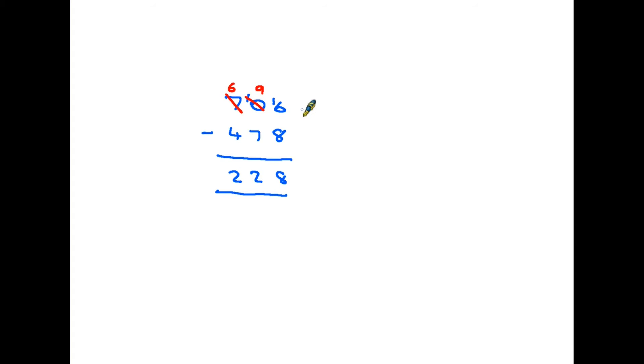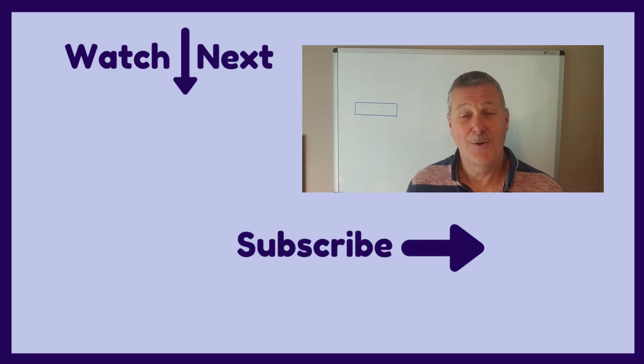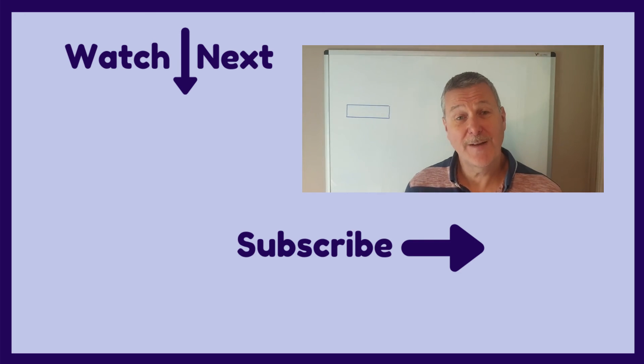So in summary, we look at the next column. Is there something that we can take to help us make the job easier? If there isn't, we move on again and we work our way backwards, taking one from each column until we have the numbers that we need.